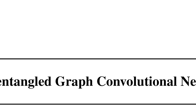Let's step back and start with the basics of graph neural networks. In a graph neural network, as the name suggests, you have a graph with nodes and edges. Think of it as a social network — we'll use this social network analogy throughout the paper review.